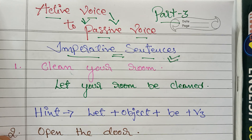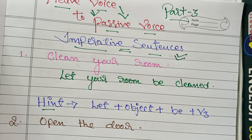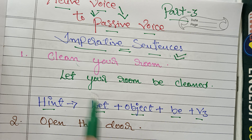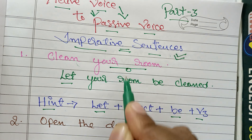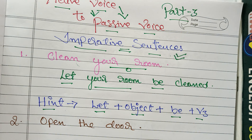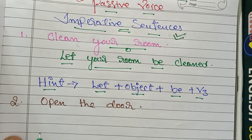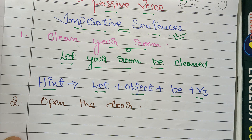Now how did I change this? Follow this trick. There should be: Let + object + be + V3. Start the sentence with 'let.' Then identify the object — here 'your room' is the object. Then use 'be,' and V3 of 'clean' is 'cleaned.' So: Let, then identify the object, then use 'be,' then change V1 to V3.